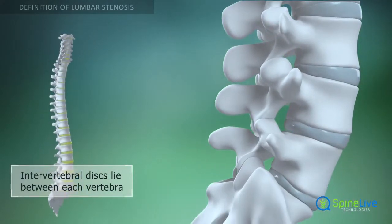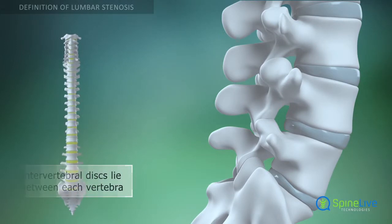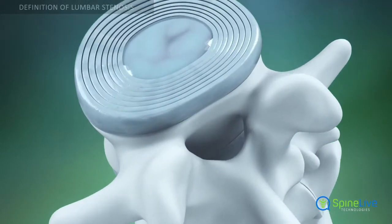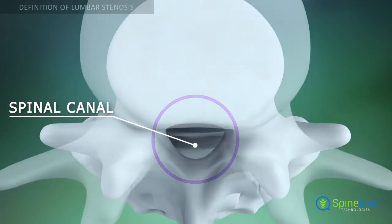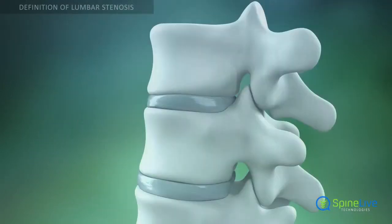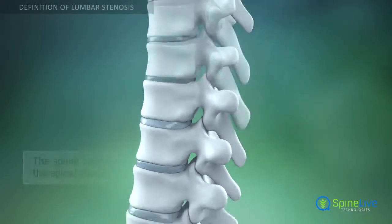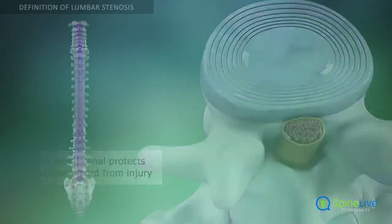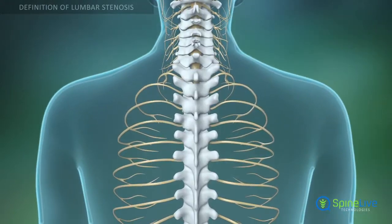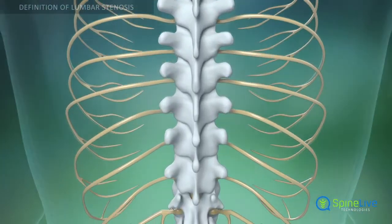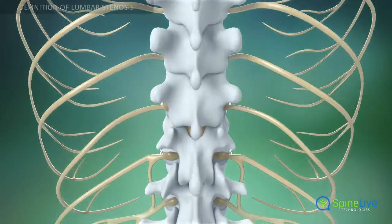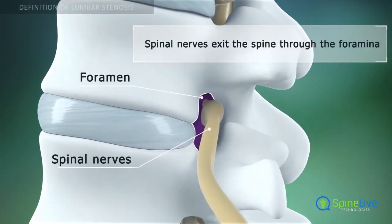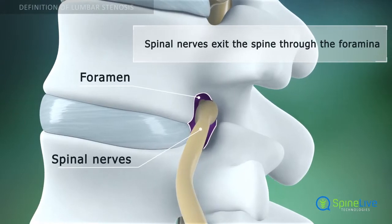These are separated by intervertebral discs. A vertical tunnel, the spinal canal, which contains the spinal cord is located behind the vertebral bodies. The spinal canal protects the spinal cord from injury. The spinal nerves branch off the spinal cord in pairs, and travel through small openings between the vertebrae, called intervertebral foramina.